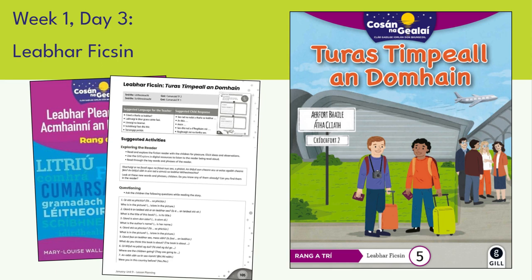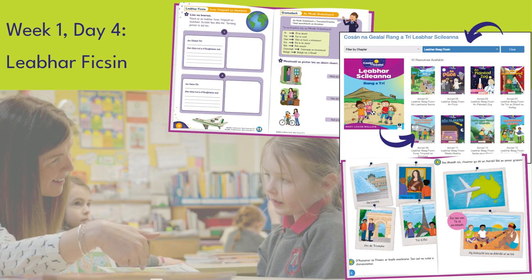Read and explore the fiction reader with the children for pleasure. For example, the fiction reader for unit 9 is Tír na gCeist. Elicit the children's ideas and observations as you read. There are sample questions in the TRB to help you with this. You could also use the gillexplorer.ie digital resources to listen to the reader being read aloud. Read through the keywords and phrases at the beginning of the reader with the children. Pre-teach any keywords and phrases by first reading through the list with the children, then asking them to show you the word. Listen again to the reader using the gillexplorer.ie digital resources. You can ask the children to spot the keywords or phrases throughout the book.